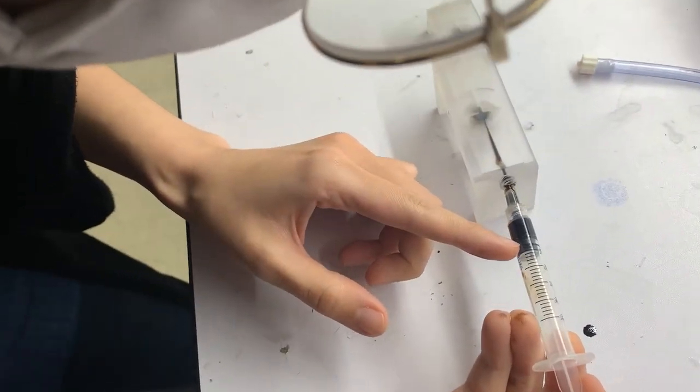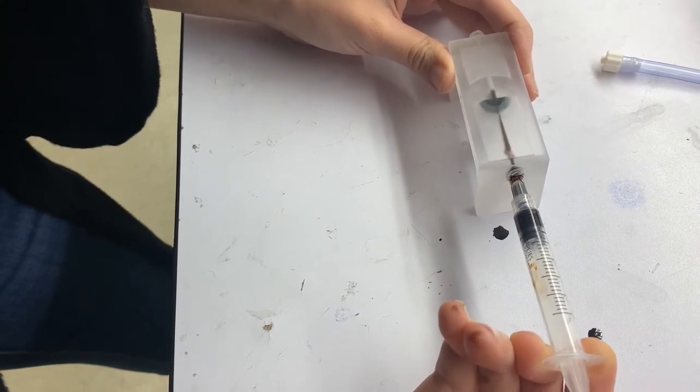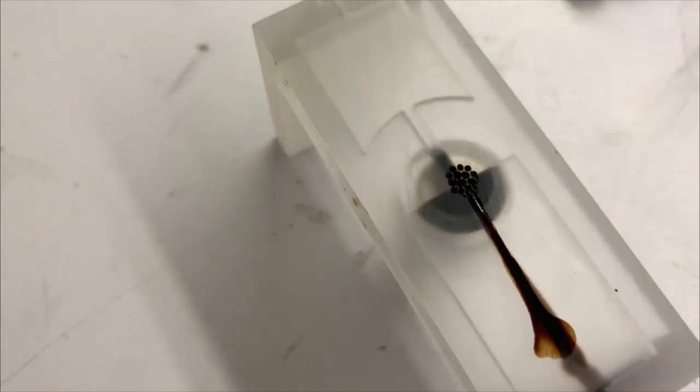We started with about 0.6 milliliters, ended with 0.4, so inside the model there is 0.2 milliliters. I made sure when injecting the fluid into the model that it touched the top of the model to create an airtight seal.